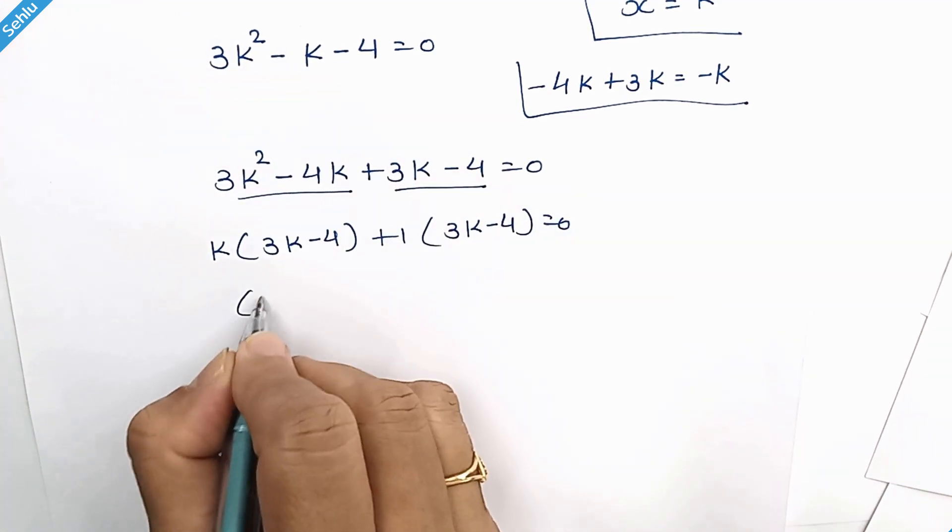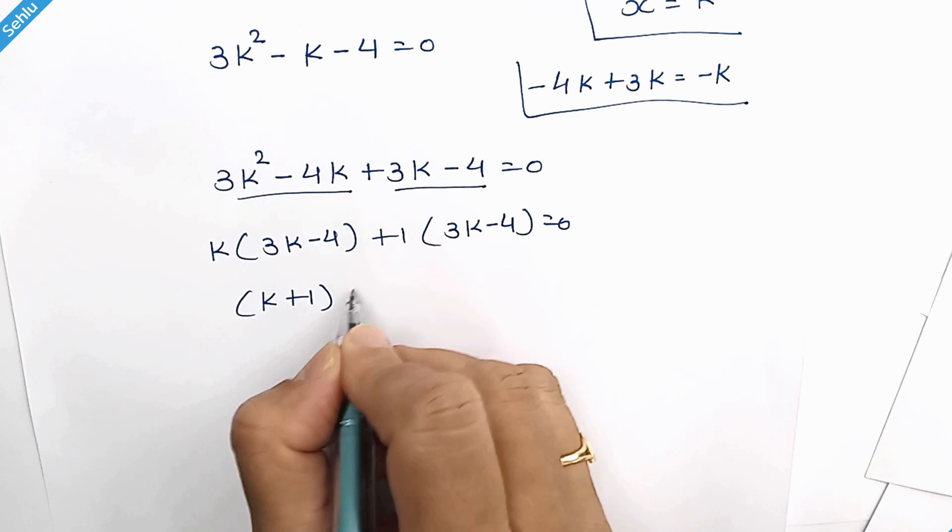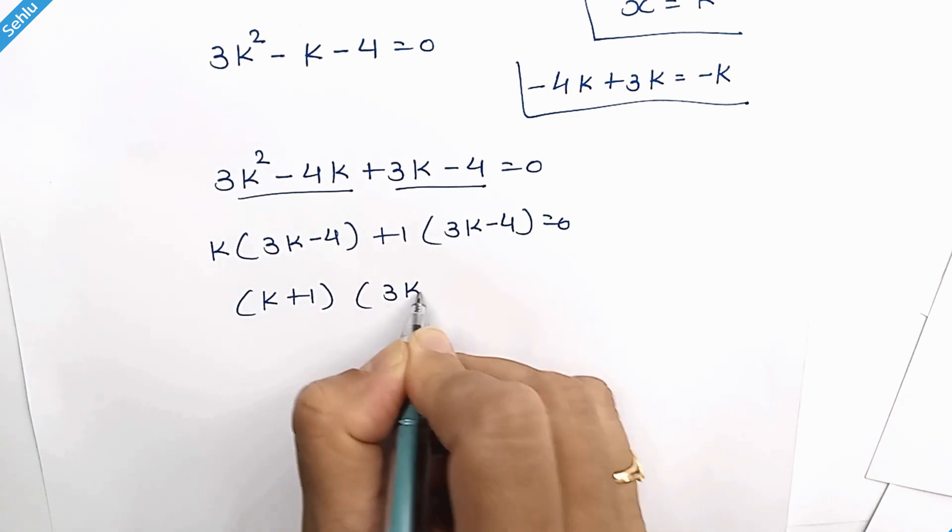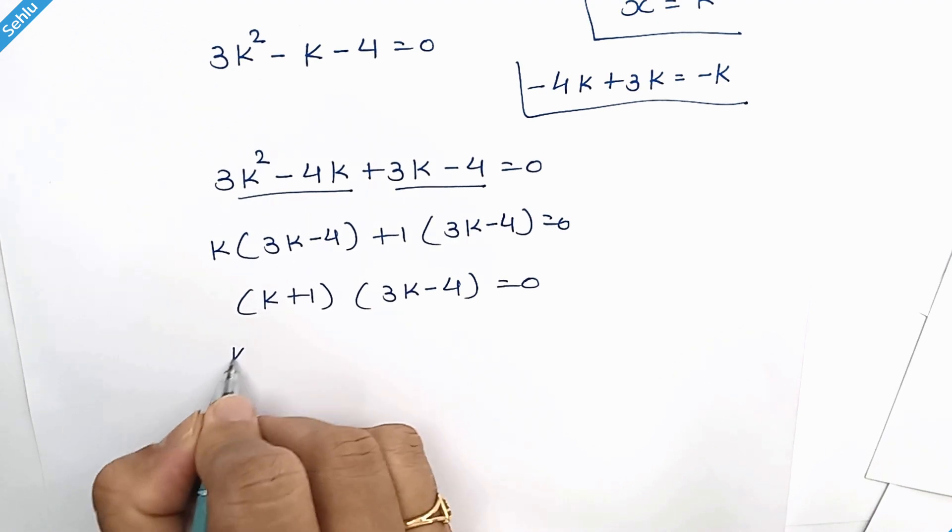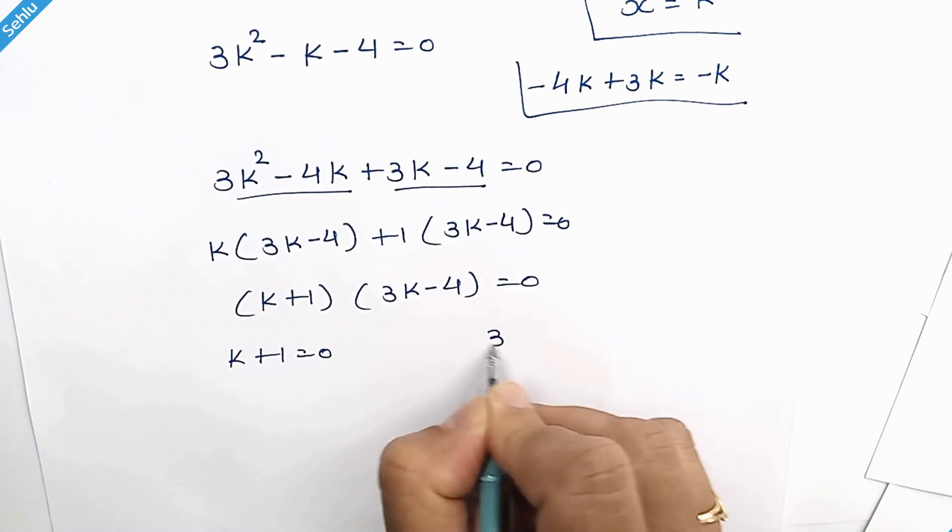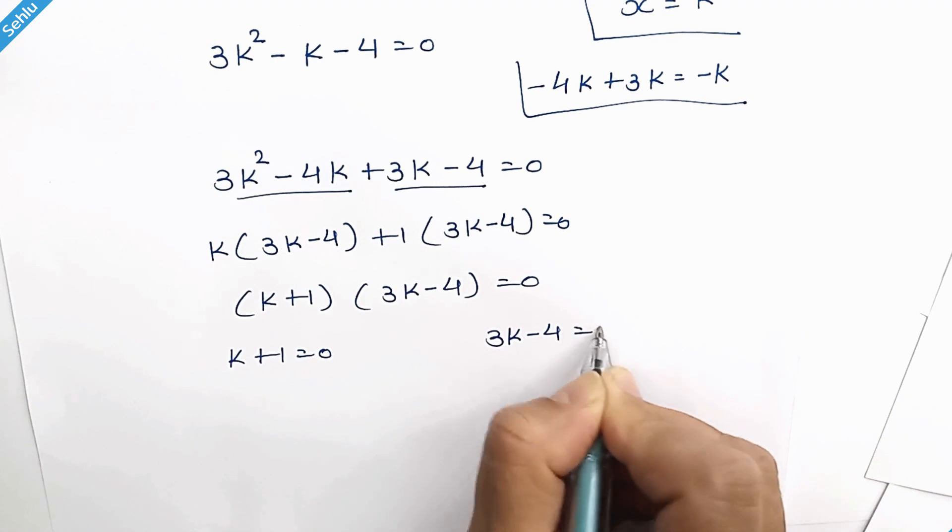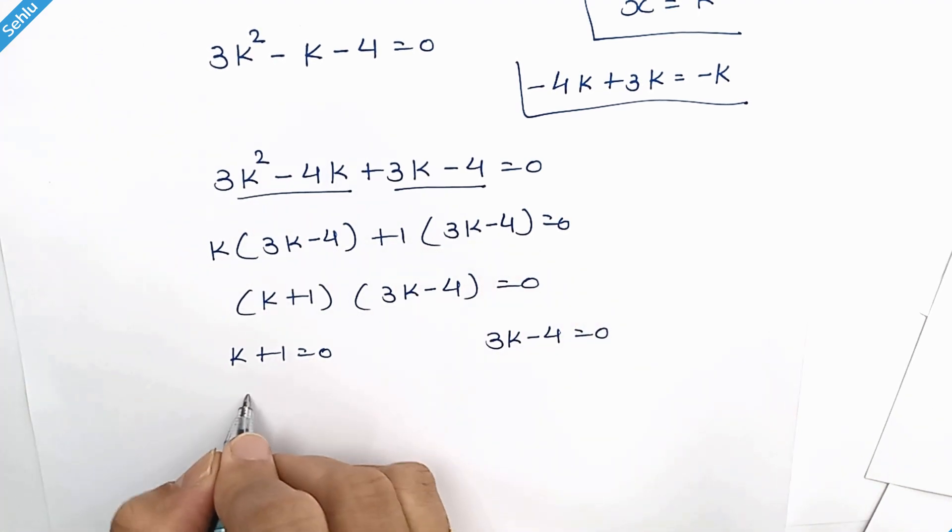So here we have k plus 1 times 3k minus 4 equals 0. So it will be k plus 1 equals 0, or 3k minus 4 equals 0. So k equals negative 1.